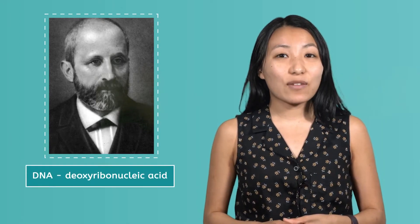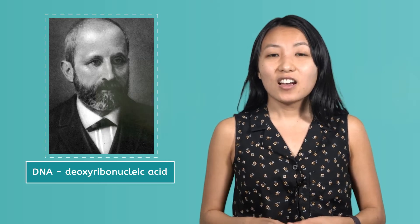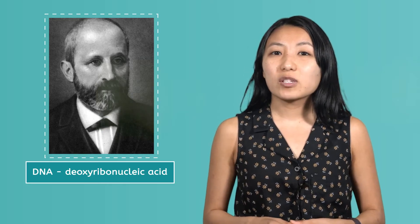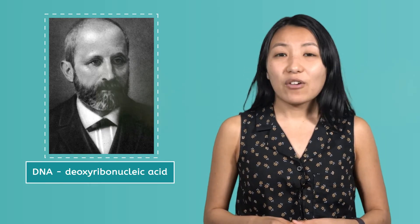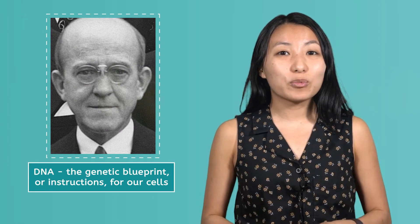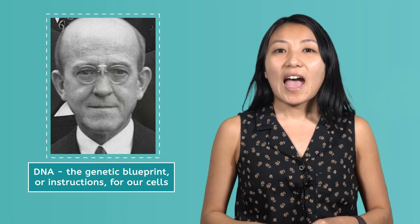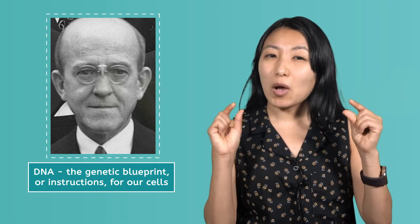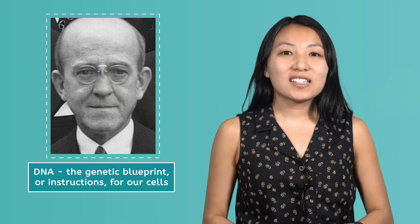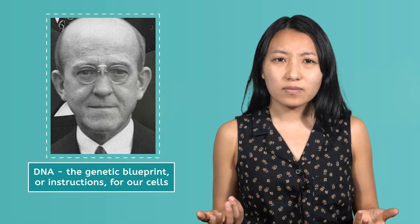When Friedrich Miescher accidentally discovered DNA, or deoxyribonucleic acid, in the 1860s, the function of this molecule was unknown. It was not until 1944 that Oswald Avery confirmed that DNA is the genetic blueprint, or instructions, for our cells. However, because it is so small, scientists had a very difficult time understanding its structure, or how it worked.